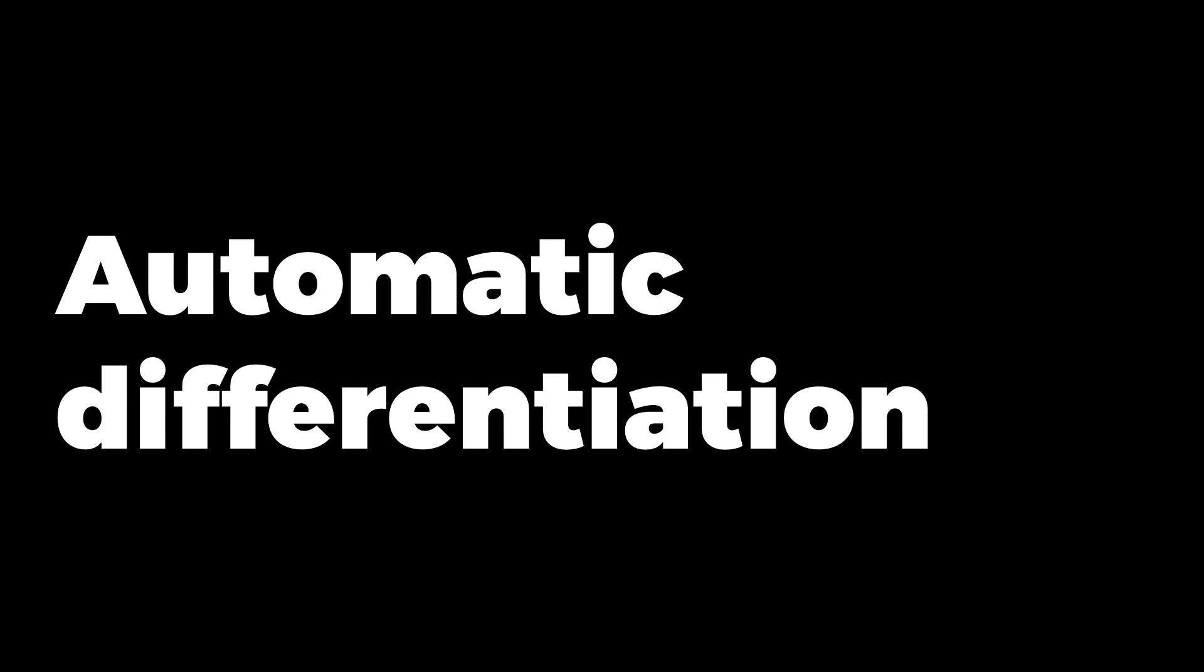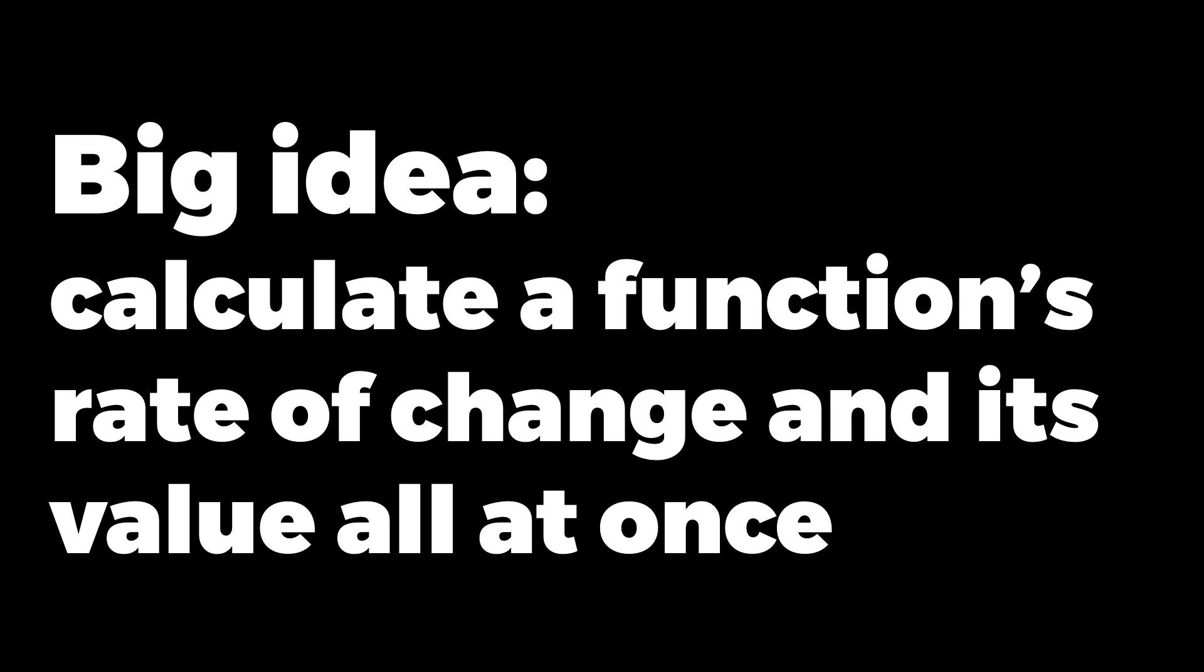So we've seen the traditional strategies, symbolic and numerical differentiation. Automatic differentiation is a less well-known technique. It's as accurate as symbolic differentiation, but as fast and easy as numerical. The big idea is to calculate a function's rate of change, and its value, all at once.